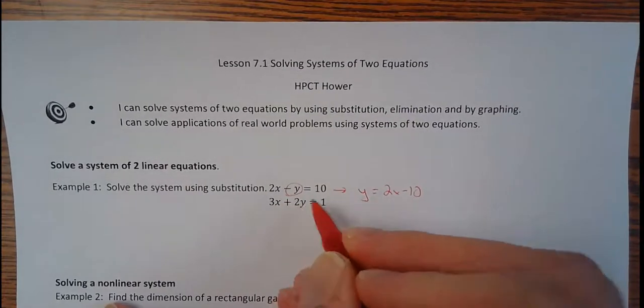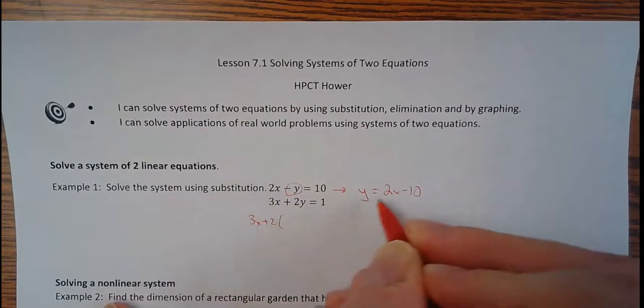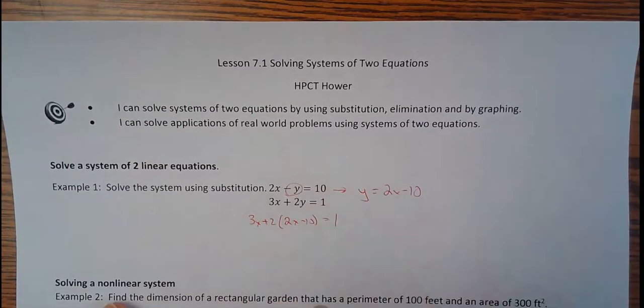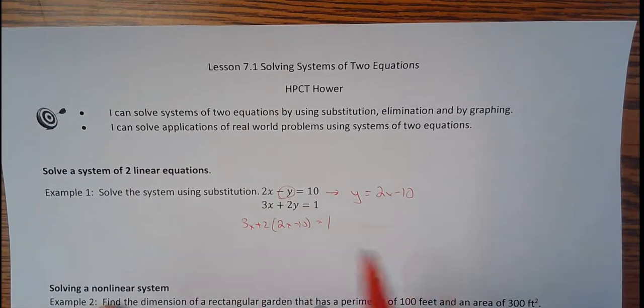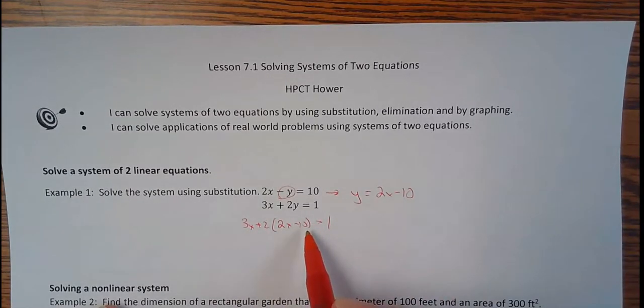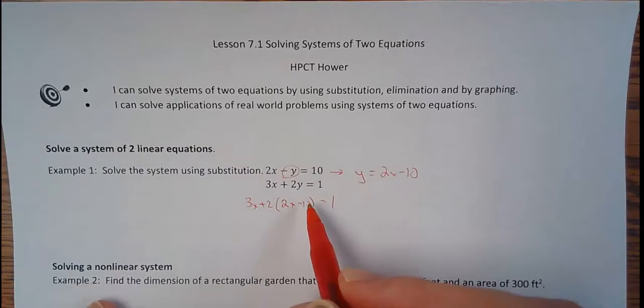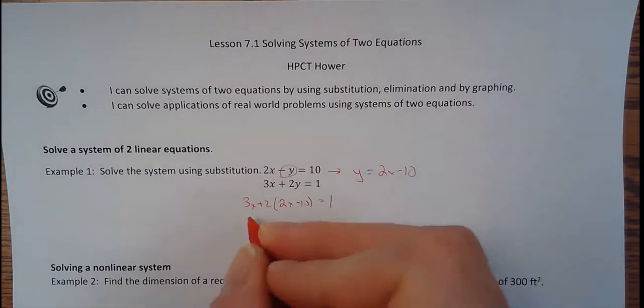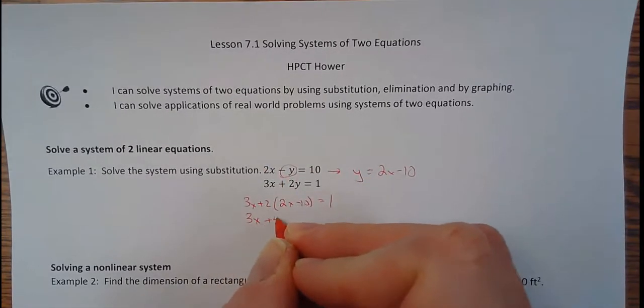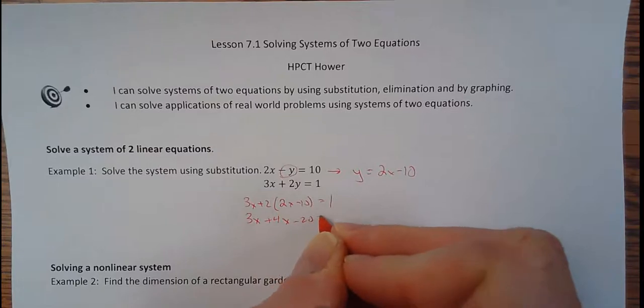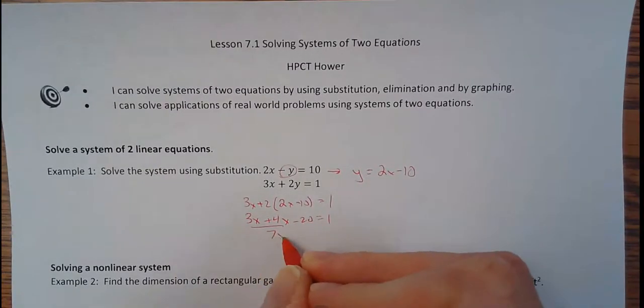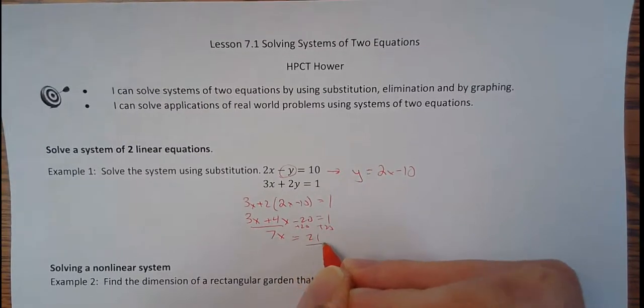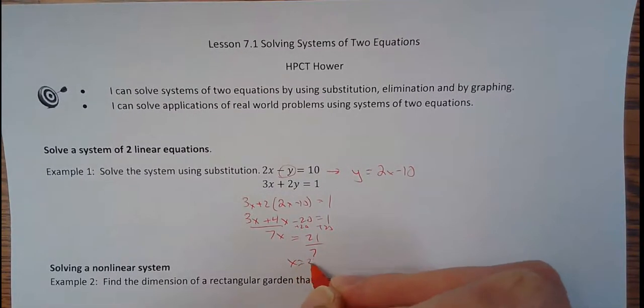Then you're going to plug that in up here. So 3x plus 2, and then instead of y, plug in 2x minus 10. That's in place. And because I did this correctly, there's no y's left. It's just x's, and that's what we want. We want an equation with just one variable, because I can solve for one variable. So 3x plus 4x minus 20 equals 1. That's 7x. I could add 20 to the right side. So 7x equals 21.